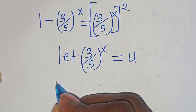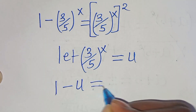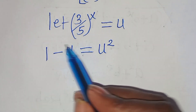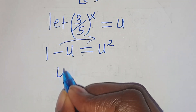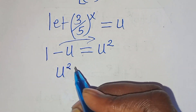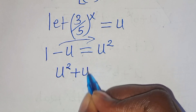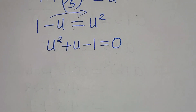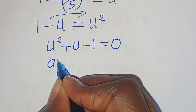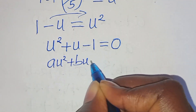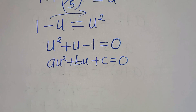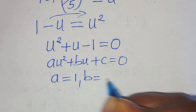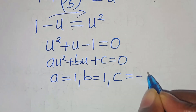Substituting u, we have 1 minus u equals u to the power of 2. Rearranging, we have u squared plus u minus 1 equals 0. This is a quadratic equation of the form au² + bu + c = 0, where a equals 1, b equals 1, and c equals minus 1.